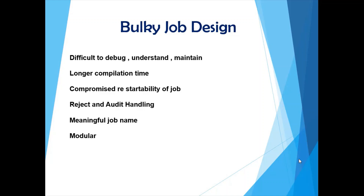So ETL audit columns and rejection handling should be performed. Another important thing — which many think doesn't matter but it does — is to give your job a meaningful job name. That makes it possible for anybody looking at the job flow to understand what that job is specifically for. You should also include a job description visible on your job canvas as an annotation, describing what the job extracts, what transformation it performs, and what output dataset it writes to.